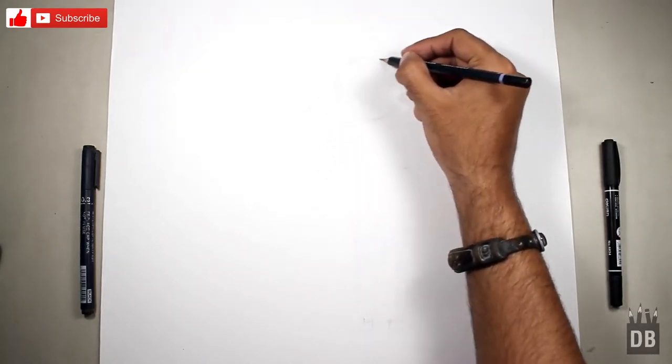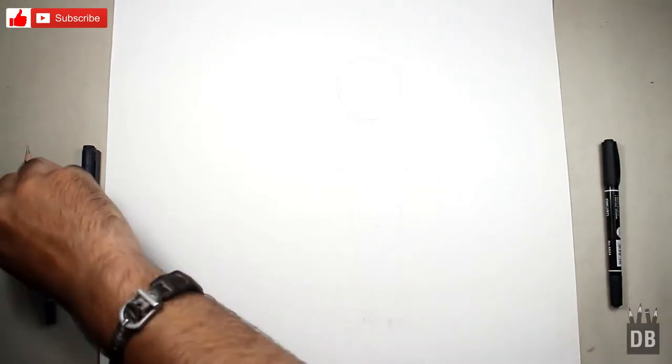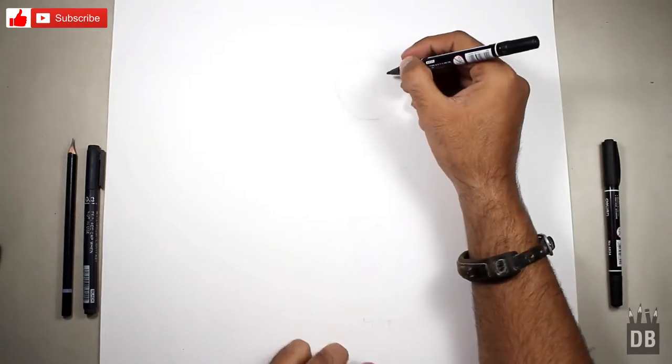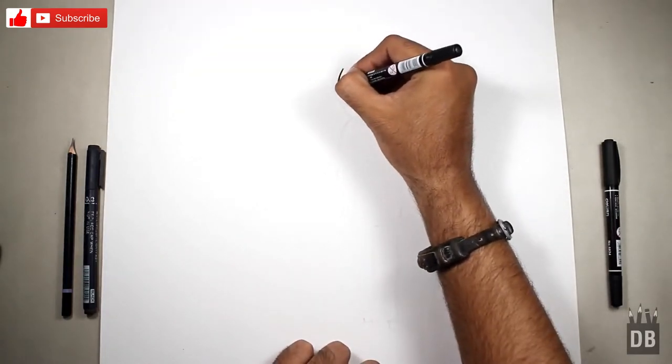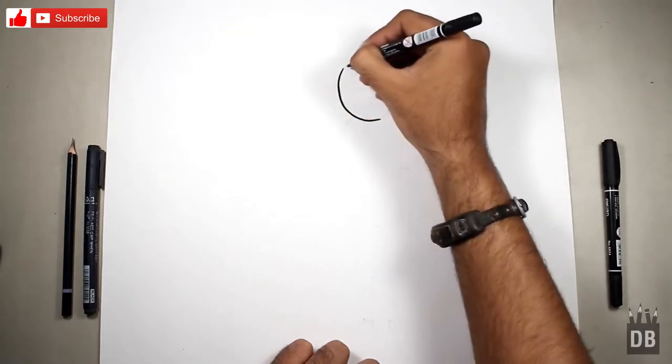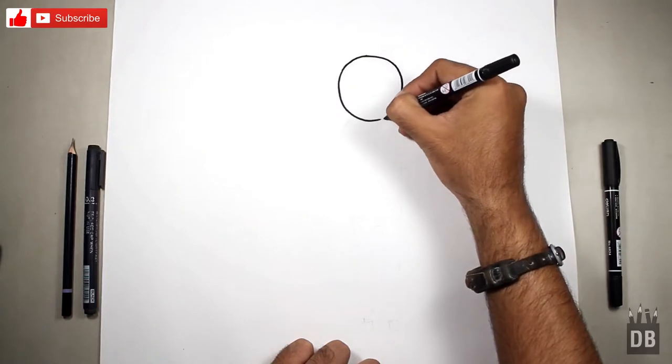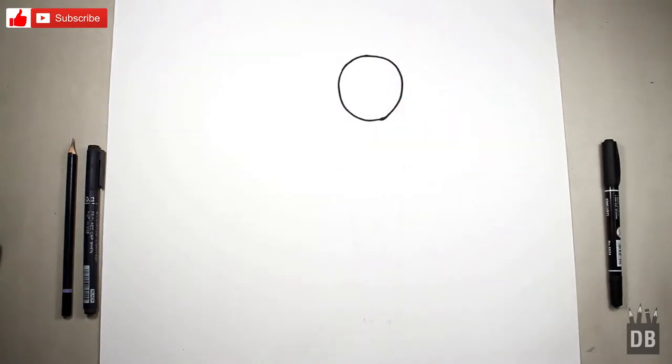Okay, so we will make the outer shape of the face first. Just make a circle, nice and steady. Okay, and now we are going to make the eyes.